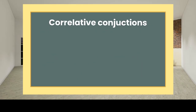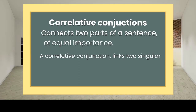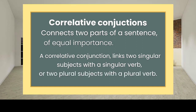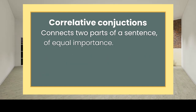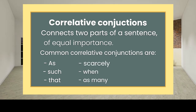A correlative conjunction connects two parts of a sentence of equal importance. It links two singular subjects with a singular verb, or two plural subjects with a plural verb. Common correlative conjunctions are: as, such, that, scarcely, when, as many, no sooner, than, and rather.